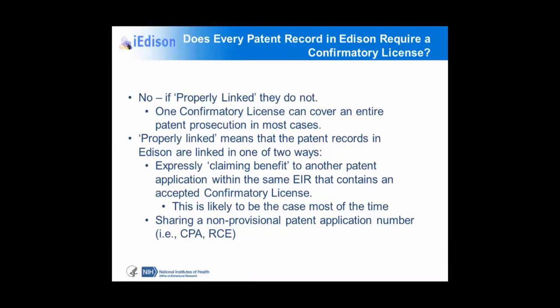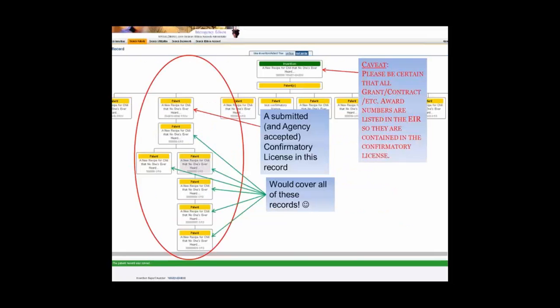Does every record need a confirmatory license? No — not if they're properly linked. One confirmatory license can cover an entire patent prosecution in most cases. Properly linked means the patent record is linked to another in one of two ways: it can express the claim of benefit to another patent application if the docket number is indicated in the patent record showing the one it claims benefit to that already has a license, or if it shares a non-provisional patent application number with another patent. As shown in the illustration, if the top patent had a license, it would cover all of the ones beneath — so one license would cover six additional records, making it a time saver. Please be certain that all grant or contract numbers are listed in the invention at the very top, so the grant numbers indicate correctly on all of the licenses submitted for the patent; otherwise they'll be incorrect and will need to be resubmitted.